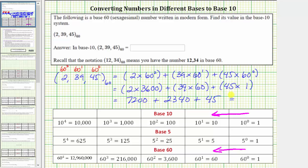This sum equals 9,585, which is the number in base 10. Going back to our question, in base 10, the number 2, 39, 45 in base 60 equals 9,585. I hope you found this helpful.